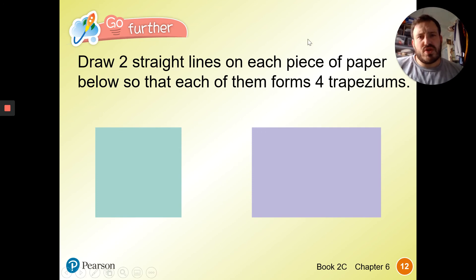So let's draw two straight lines on each paper, so that each of them forms four trapeziums. So how are we going to draw two straight lines on these shapes? We can draw one straight line there, which makes us a rectangle on either side. And then we draw one line going diagonally through, and look, we've got one, two, three, four trapeziums.